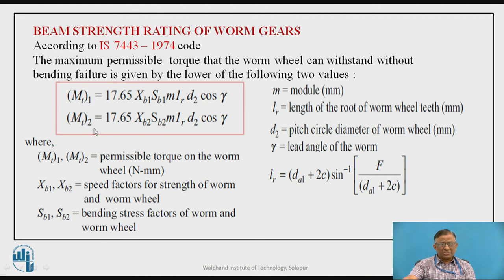Whichever of Torque 1 or Torque 2 is the lower value, that is the torque this worm gear pair can safely transmit without bending failure. This is the beam strength rating — the maximum torque it can transmit without bending failure. LR is the length of root contact, calculated from the geometry equation already seen in previous videos.